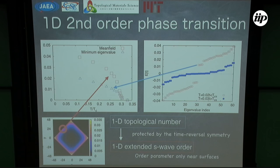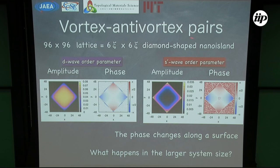I'd like to discuss vortex-antivortex pairs. First we consider a smaller system size of 6×6 diamond-shaped nano island. In this case there are no vortex-antivortex pairs, but the phase changes along the surface from minus pi to minus pi.